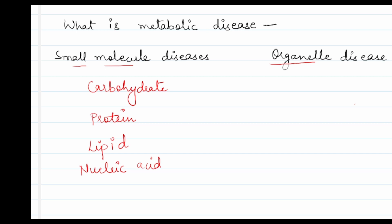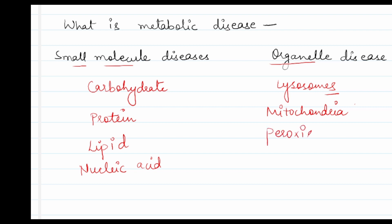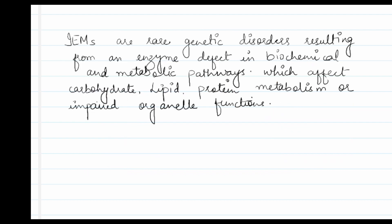Or maybe organelle diseases, meaning an organelle is affected — like the lysosome. Accumulation of substances occurs in the lysosome, causing lysosomal storage diseases, or in the mitochondria causing mitochondrial storage diseases, or in the peroxisome, or in the cytoplasm. So IEM may be small molecule diseases or organelle diseases. The definition may be: IEM are rare genetic disorders resulting from an enzyme defect in biochemical and metabolic pathways.